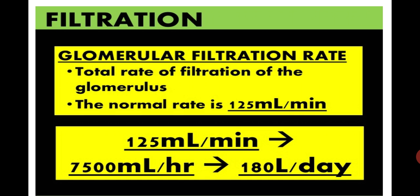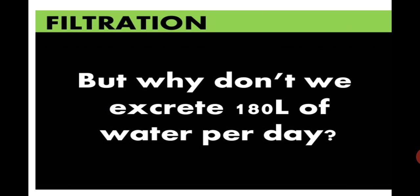If 180 liters of blood is filtered per day, why don't humans pass urine in that amount? This is due to the process of reabsorption. Not all things entering the glomerular filtrate are eliminated from the body — most things needed by the body are reabsorbed. The next step of urine formation is reabsorption, and we will also discuss secretion in our next lesson. Thank you and Allah Hafiz.